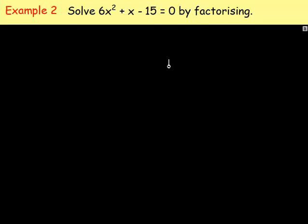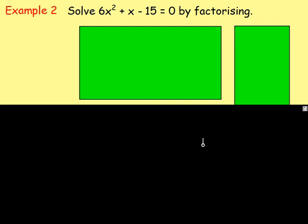Example number two. Solve 6x squared plus x minus 15 equals zero by factorizing. Depending on who your teacher is, you may have been taught factorizing different ways. It doesn't matter which way you do it as long as you get the same answer. What I'll do is I'll show you how I would do it. And then hopefully you get the same line here. And then I'll show you what you would do after that.